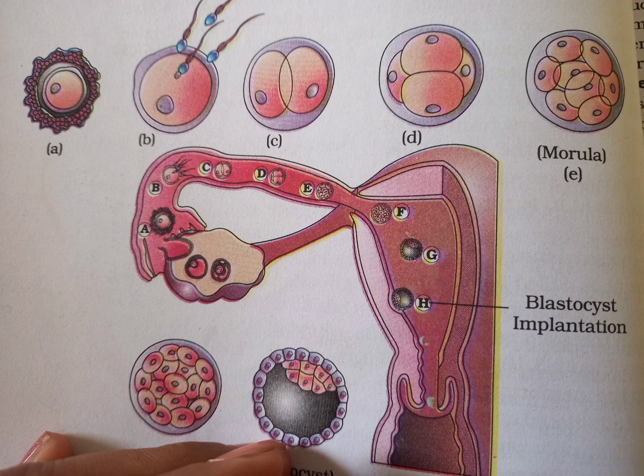The trophoblast layer then gets attached to the endometrium, which is the innermost layer of the uterus. The trophoblast attaches to the endometrium, while the inner cell mass gets differentiated as the embryo. After attachment, the uterine cells divide rapidly and cover the blastocyst. As a result, the blastocyst becomes embedded in the endometrium of the uterus — this process is called implantation.